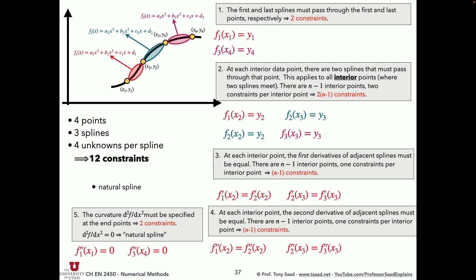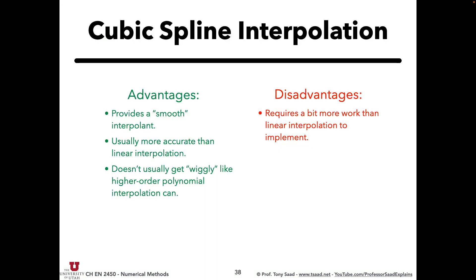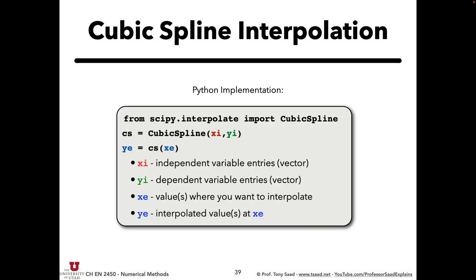Fortunately, Python does that for us, so we're not going to program it ourselves — it's quite a daunting thing to do. Just like Fsolve, cubic splines don't come from NumPy, they come from SciPy. You import CubicSpline from scipy.interpolate. The format looks like this: you call CubicSpline on xi and yi, and it occurs in two steps — just like polyfit and polyval.